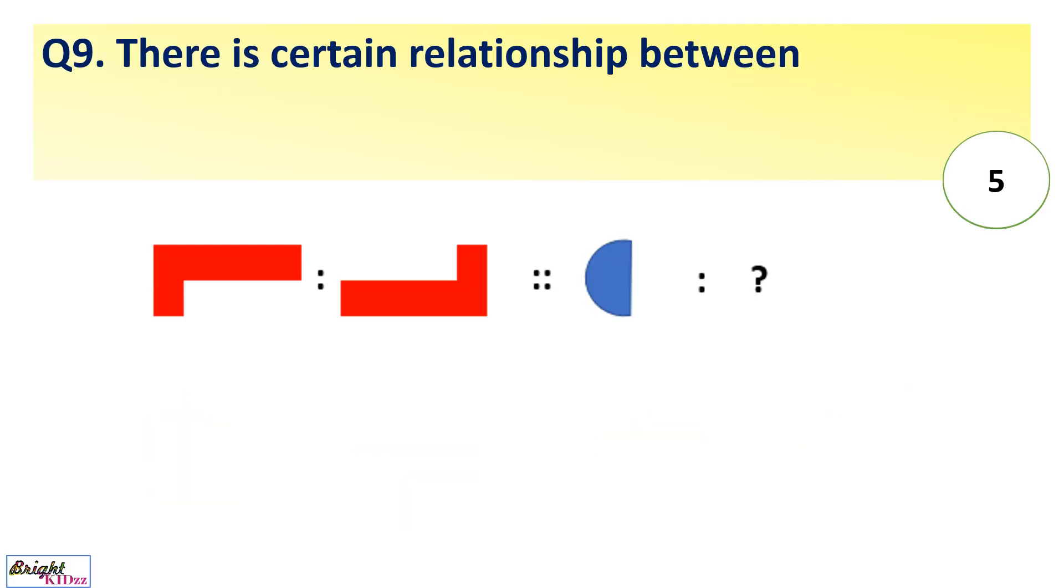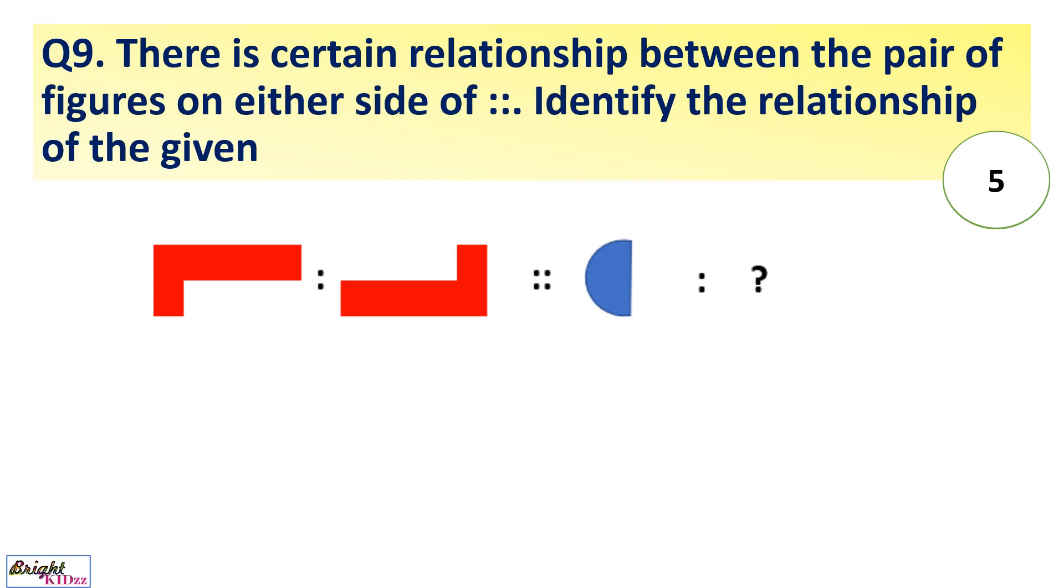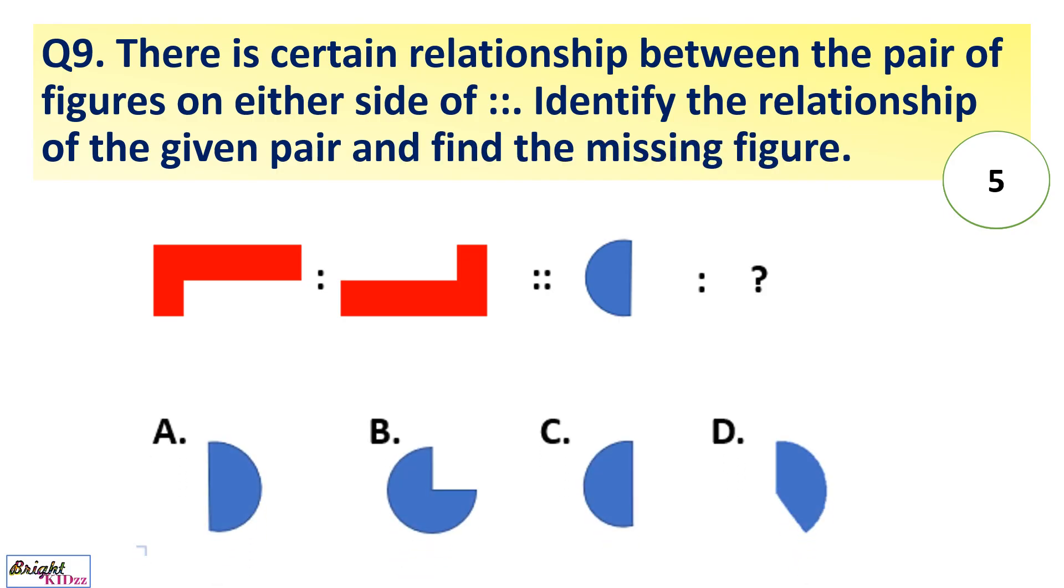There is a certain relationship between the pair of figures on either side. Identify the relation of the given pair and find the missing figure. Answer A. Here we can see both the figures join to combine a rectangle, so the other side of the circle is required to complete this semicircle.